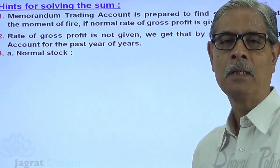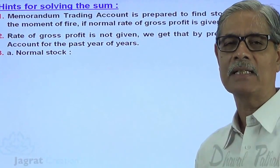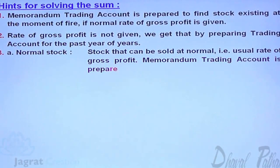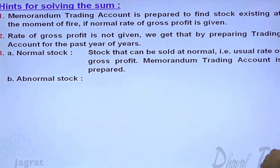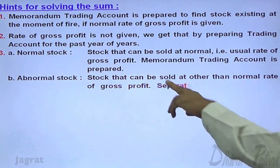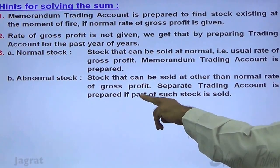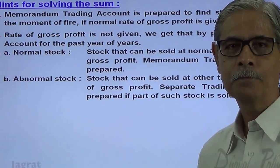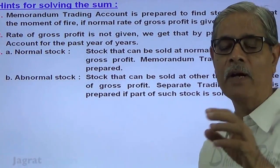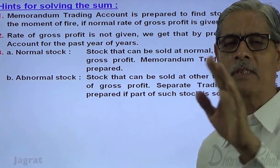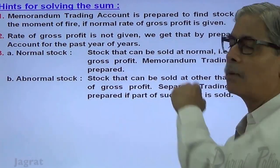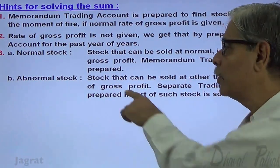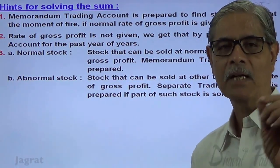When finding stock at the moment of fire, stock is classified into two categories. Normal stock is stock that can be sold at the normal or usual rate of gross profit. Stock other than this is known as abnormal stock — sold at other than the normal rate of profit. A separate trading account is prepared if part of such abnormal stock has been sold. We need to find out what was the normal stock and what was the abnormal stock at the moment of fire.